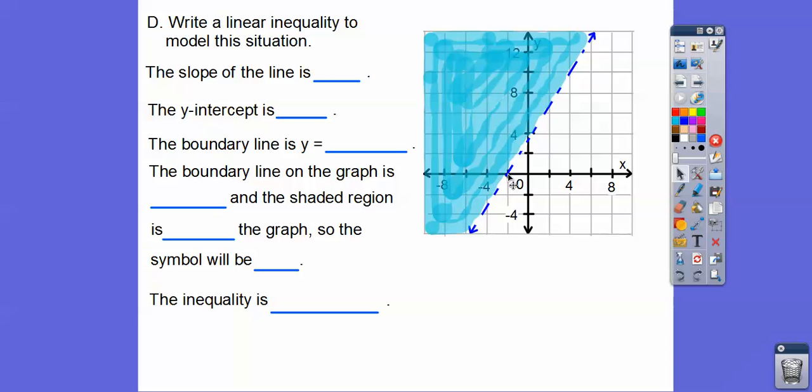So it went up 2, 4, and it went over 2 plus 1 more is 3. So the slope is 4/3, rise over run. The y-intercept is right there. There's the y-intercept. So there's 2, there's 4. That must be 3 right there.